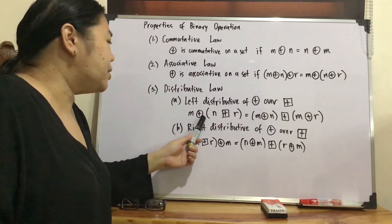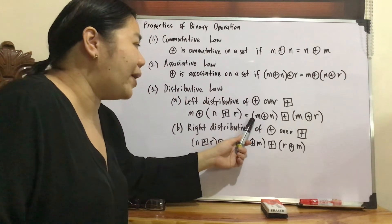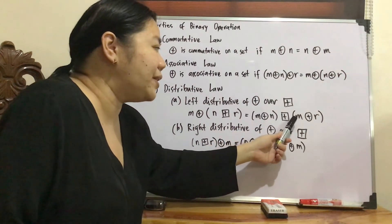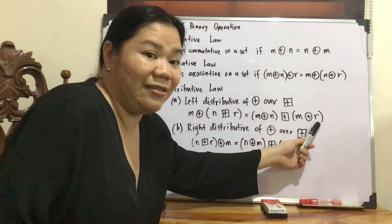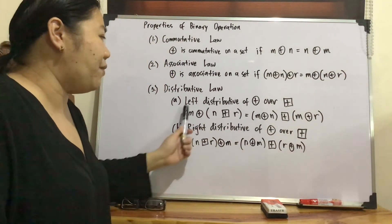M plus circle quantity N plus square R is equal to quantity M plus circle N plus square quantity M plus circle R. Left distributive. So see here, M is coming from the left.